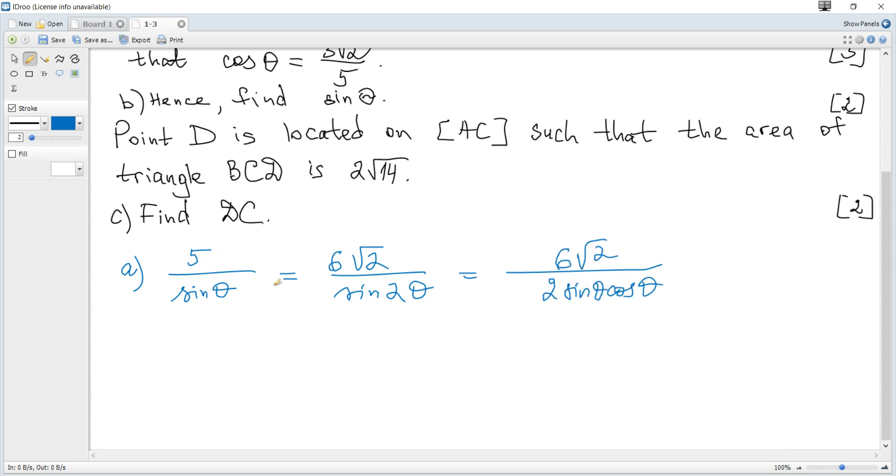Sine cancels, hence it becomes 5 equals 3, and we can divide numerator and denominator by 2 to get 3 times root 2 over cosine of theta.